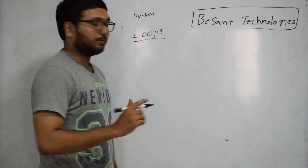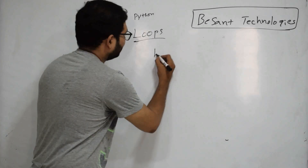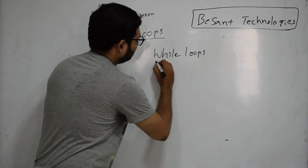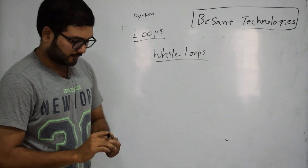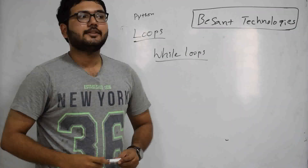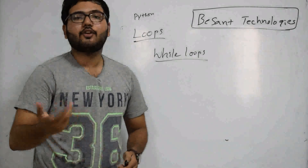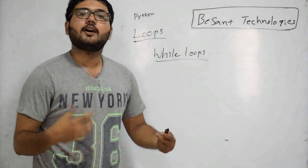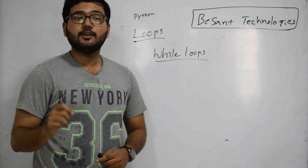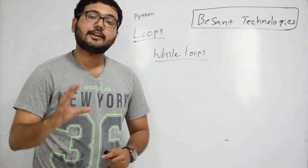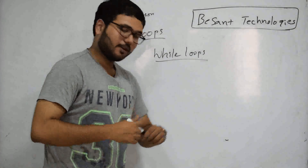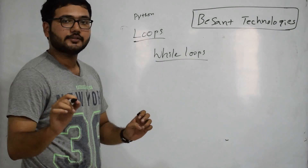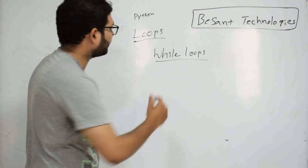Now, we are going to see while loops. People may think, we have a for loop, what is the need of a while loop? While loop can be used if you want to check with a condition. I'll give you a perfect example to print even numbers — the top 20 even numbers.